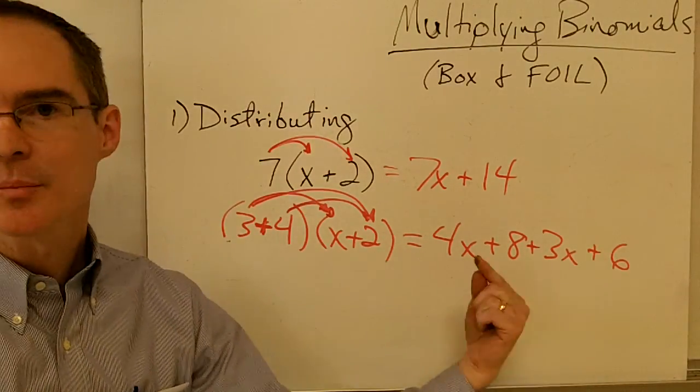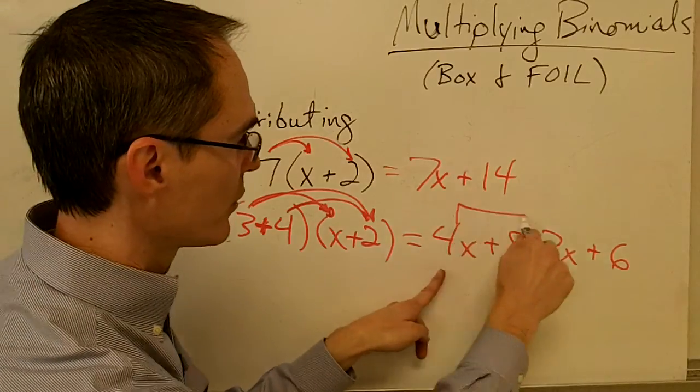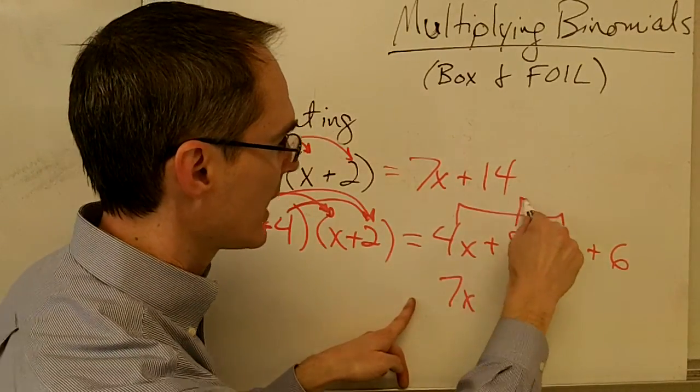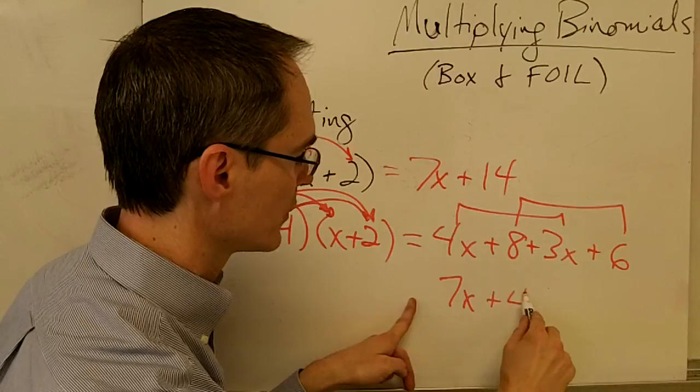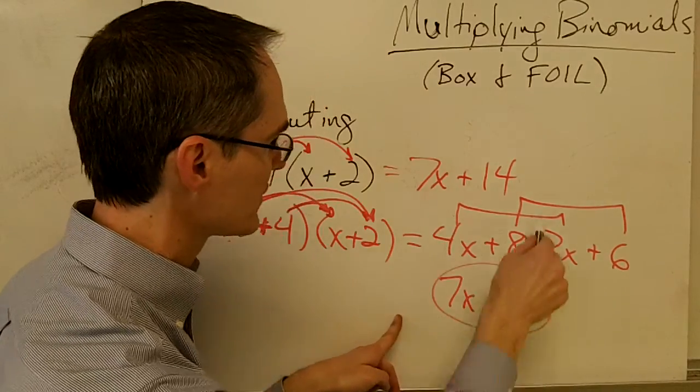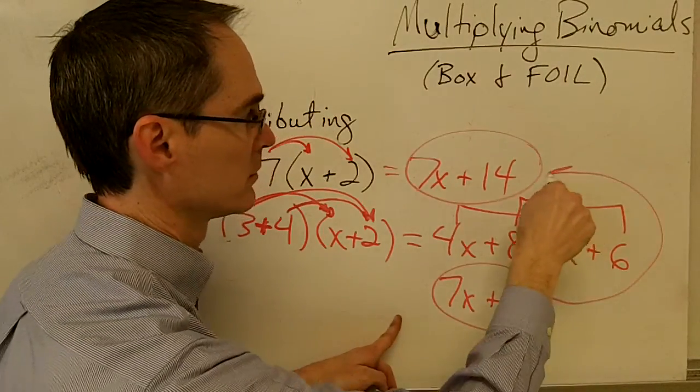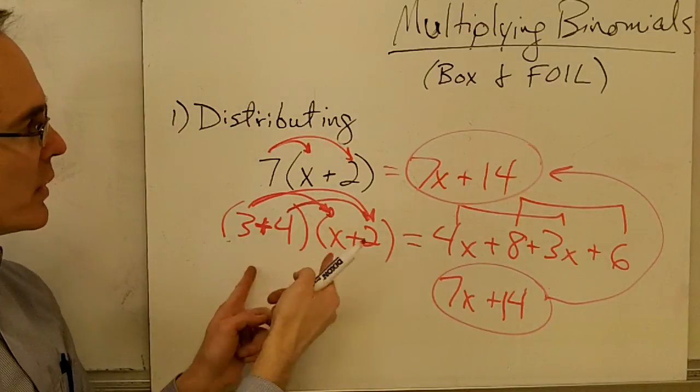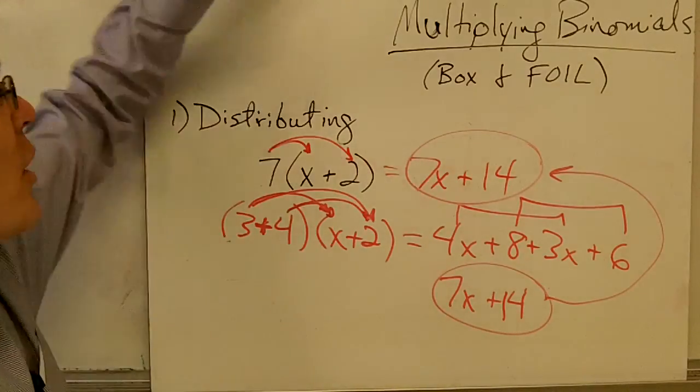Well, now, if I just collect up all my like terms, 4x and 3x is 7x, and 8 and 6 is 14, and I get the same thing that I got before. This is all you're doing when you are multiplying binomials. You're just using the distributive property.